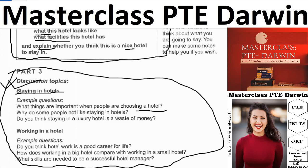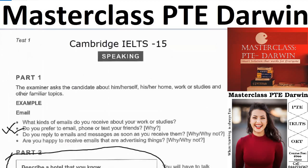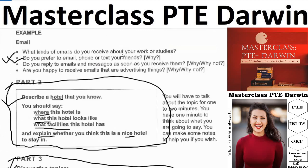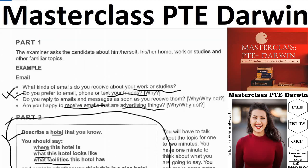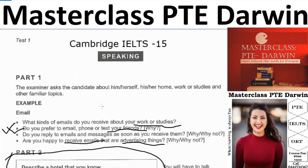A student asks how to improve vocabulary. The suggestion: go through IELTS Cambridge books (books 1 to 15), find new words, take note of them, write down the meaning and how to use them. You can buy Cambridge books 1 to 15 from any market, or download them online. The instructor offers to share a downloadable link for the 15th edition.